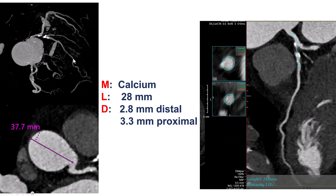Planning the PCI, we use the acronym MLD Max: M stands for morphology, L for length, and D for diameter. We can get all three components from the pre-procedural CT. There is circumferential calcium. The length of the lesion was 28 millimeters, and the reference vessel diameter was 2.8 millimeters distally and 3.3 millimeters proximally.